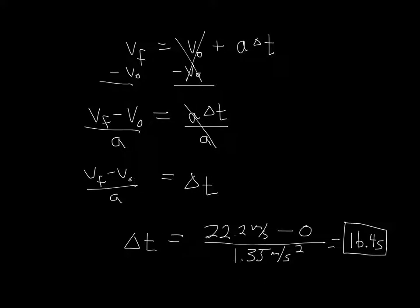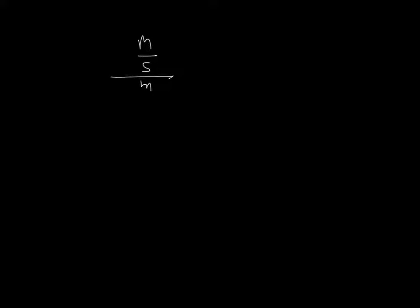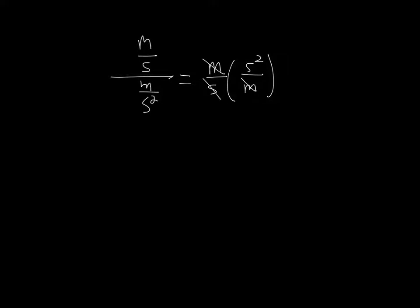The last thing I do is a sanity check. I have meters per second divided by meters per second squared. Dividing by a fraction means multiplying by its reciprocal: meters/second times seconds²/meters. The meters cancel, one second cancels, and I end up with just seconds — a unit of time. The sanity check passes, so we've finished part one of this problem.